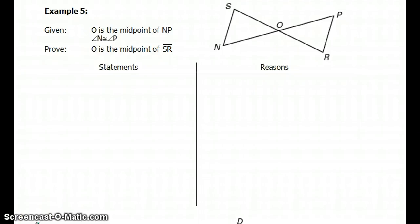This is a video explaining how to complete example 5 on the CPCTC Day 2 handout. The first thing I'm going to do is write out the given. It says O is the midpoint of NP.